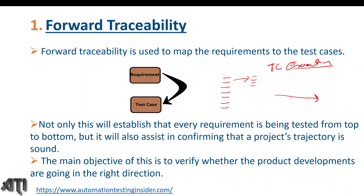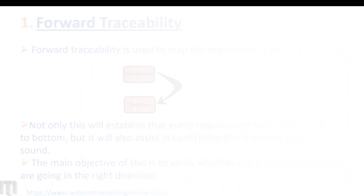Whenever there is a change in the requirement, the BA updates the requirement, and then we update our test cases accordingly and map to the correct test cases. This is how the forward traceability matrix works — it goes in the forward direction. Later, we execute the test cases based on what we have written, then map to the test results and defects as well.